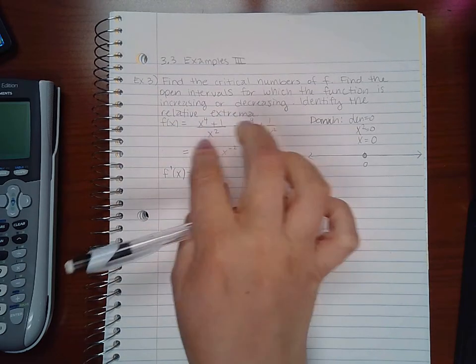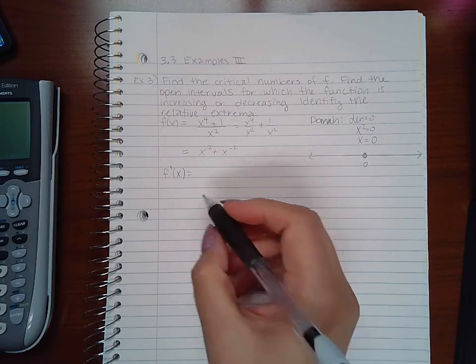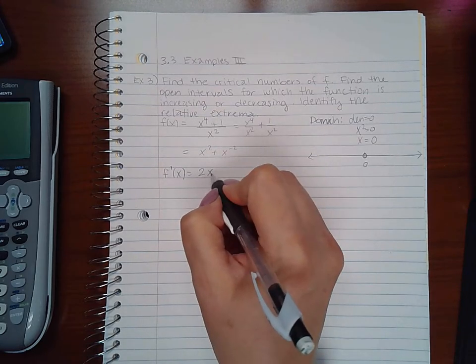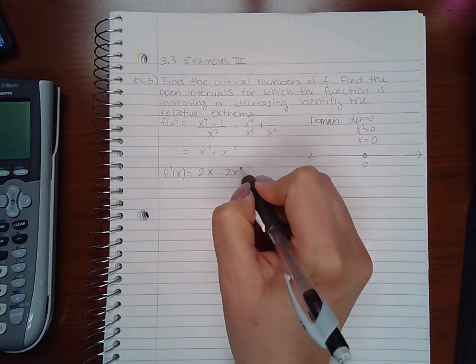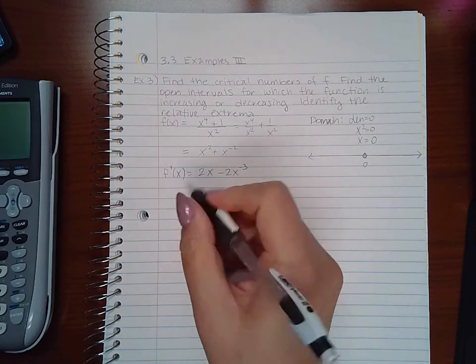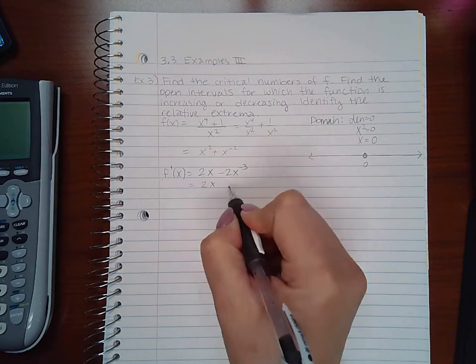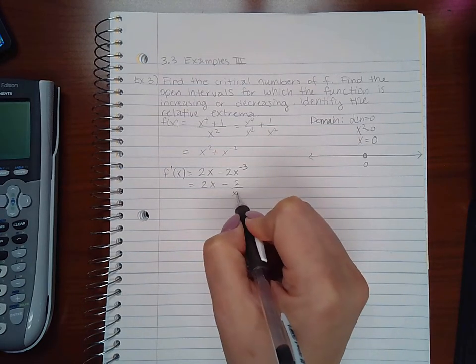You could use the quotient rule and get the same answer. Here I get 2x minus 2x to the negative 3, or 2x minus 2 over x cubed.